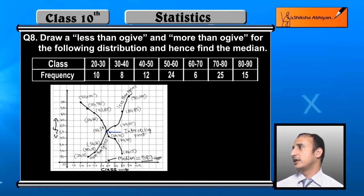The intersecting point, this x value, this x value is approximately 58.3, approximately between 50 and 60.